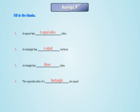Activity 4: Fill in the blanks. 1. A square has ___ sides. 2. A rectangle has ___ vertices. 3. A triangle has ___ sides. 4. The opposite sides of a ___ are equal.